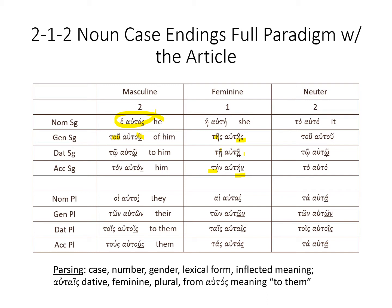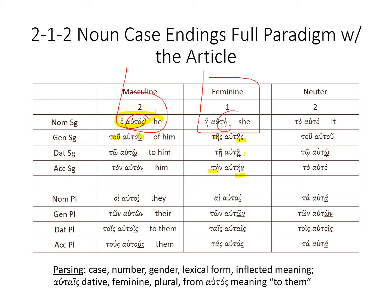Here we have our paradigm: αὐτός, αὐτή, αὐτό. So masculine is αὐτός, feminine is αὐτή, neuter is αὐτό. The ending on the neuter in the nominative singular is exactly the same as the accusative, and the plural is exactly the same as well. These patterns that we've looked at in the noun rules are going to be exemplified here with αὐτός. Looking at the feminine: αὐτή, αὐτῆς, αὐτῇ, αὐτήν, αὐταί, αὐτῶν, αὐταῖς, αὐτάς.